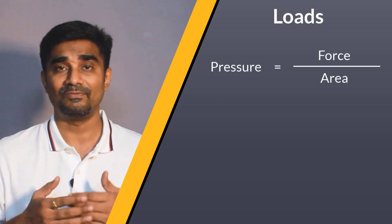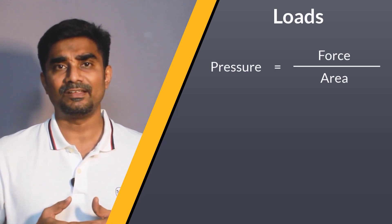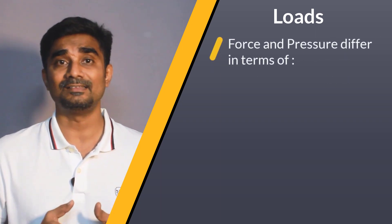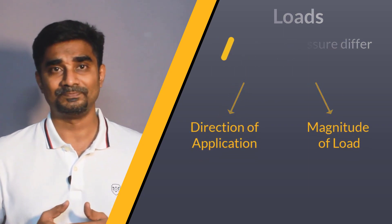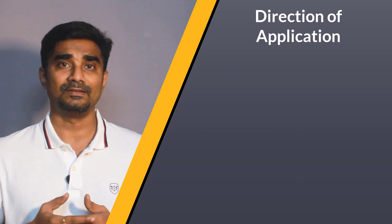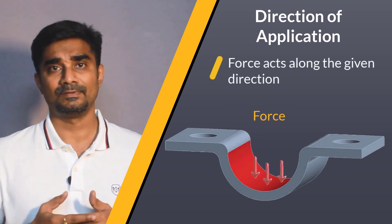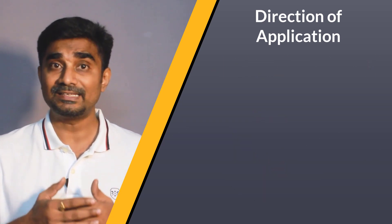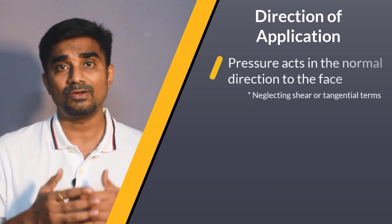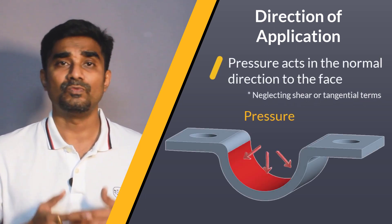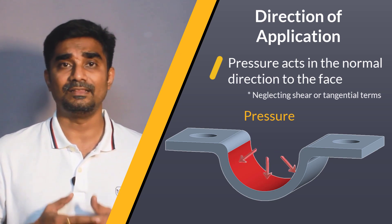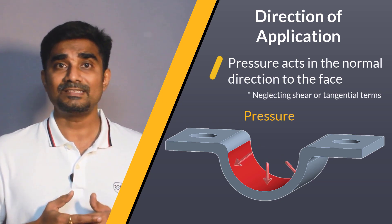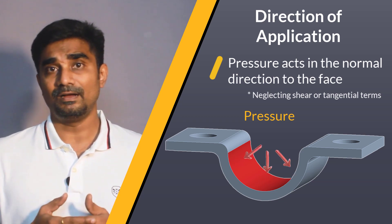While we may think of pressure and force to be the same — just a difference of a factor of the area — the real difference between force and pressure is how the solver handles the definition of direction and magnitude. When we talk about the direction of application, force is specified in a given direction and it always maintains the direction of application throughout the simulation. For a fluid exerting pressure on the structure, the shear or tangential terms may be neglected, so we can assume that the pressure only acts in the normal direction to the face, even if the structure deforms. That is why pressure load always acts normal to the face rather than maintaining a particular direction.